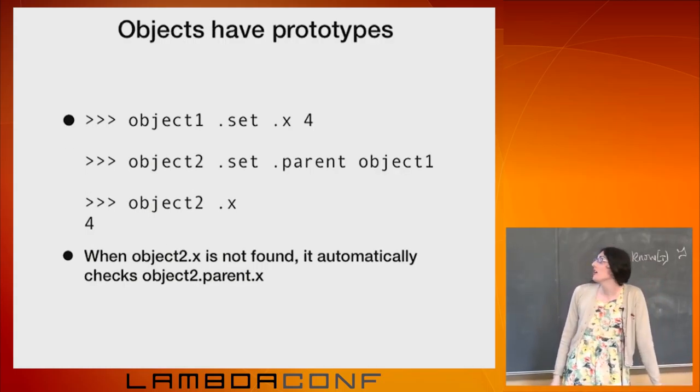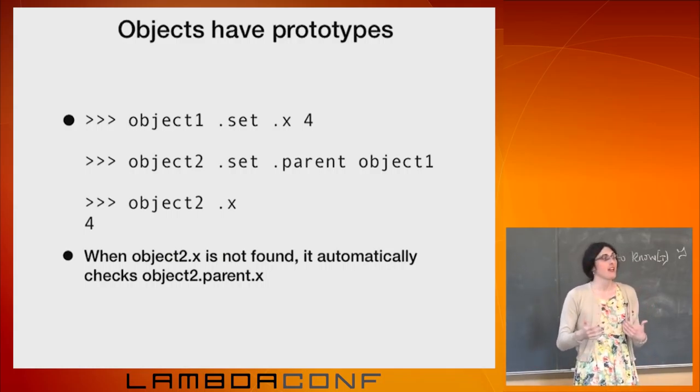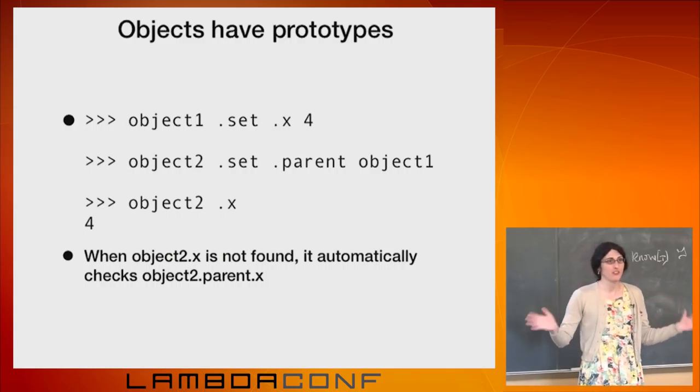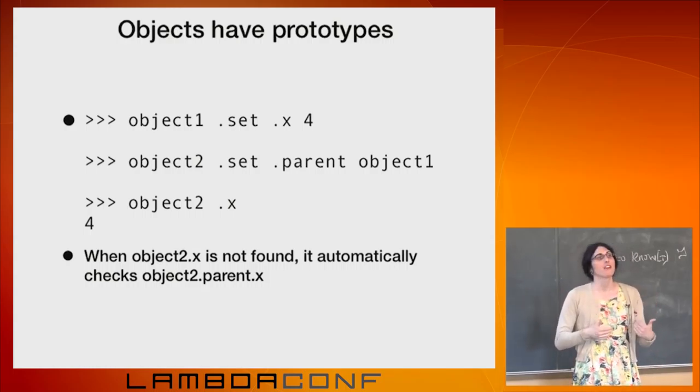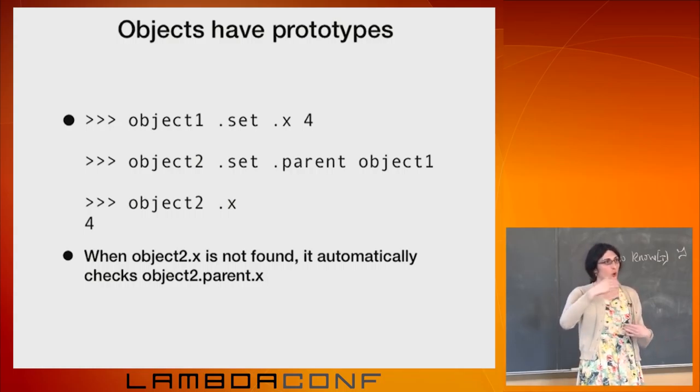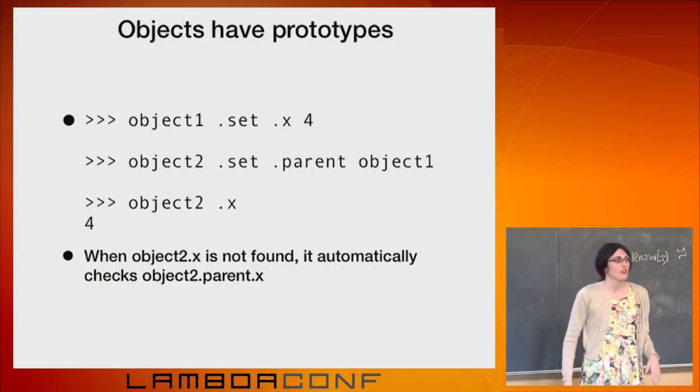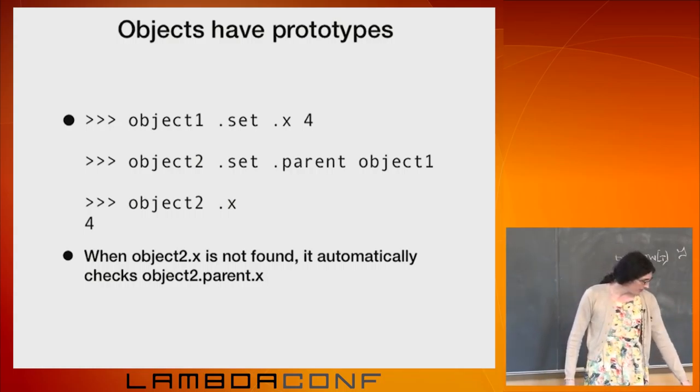Objects have prototypes. They have inheritance. If you look up the atom .x mapping on object, and object doesn't have an x field, it will automatically check, it will look up the .parent field automatically, and it will forward to that. And you could have a chain of these. So we've just implemented inheritance by just saying forward to this parent.